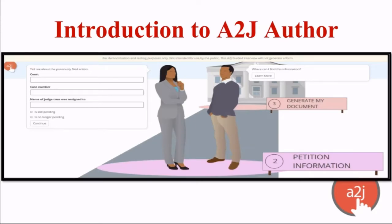A to J Author was first created in 2004 as the first pro se friendly front-end interface for document assembly. It's been used almost four million times in the past 12 years to help pro se litigants produce over two million documents. A to J Author is in about 44 states and four countries as of 2017.